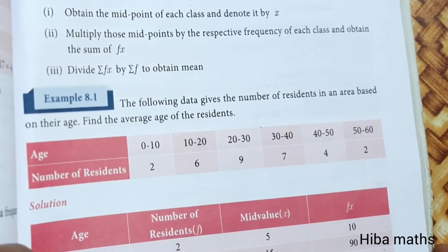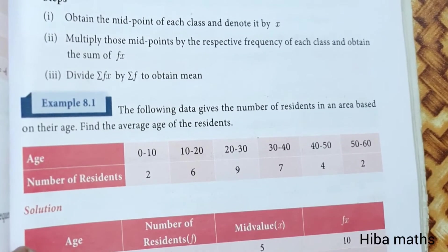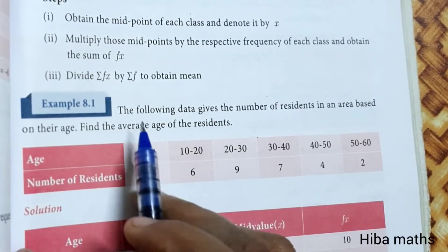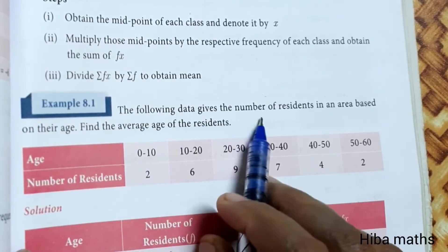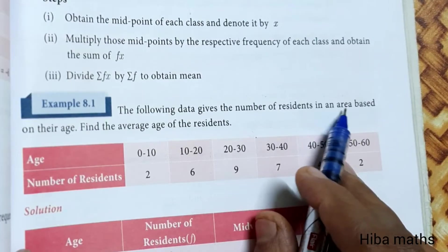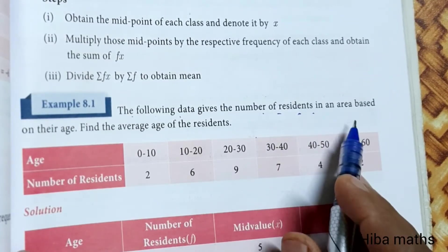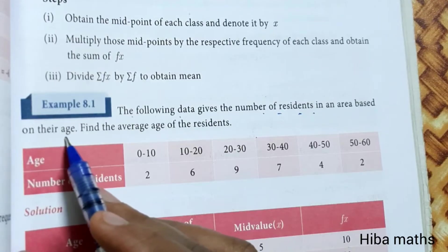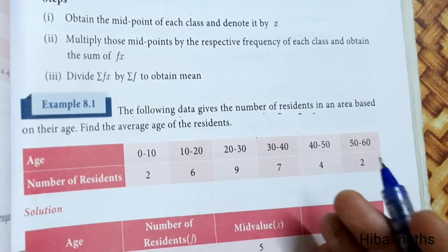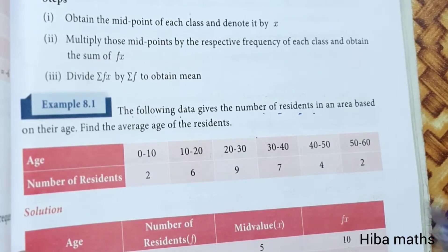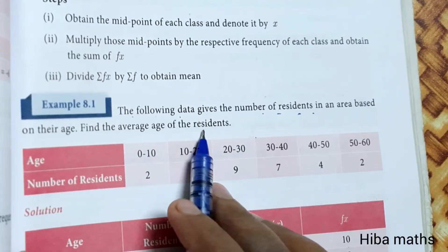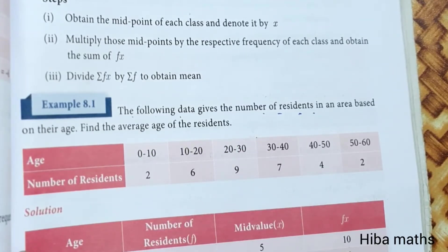Hello students, welcome to Hiba Maths, 9th Standard Maths Chapter 8, Example 8.1. The following data gives the number of residents in an area based on their age. Find the average age of the residents.